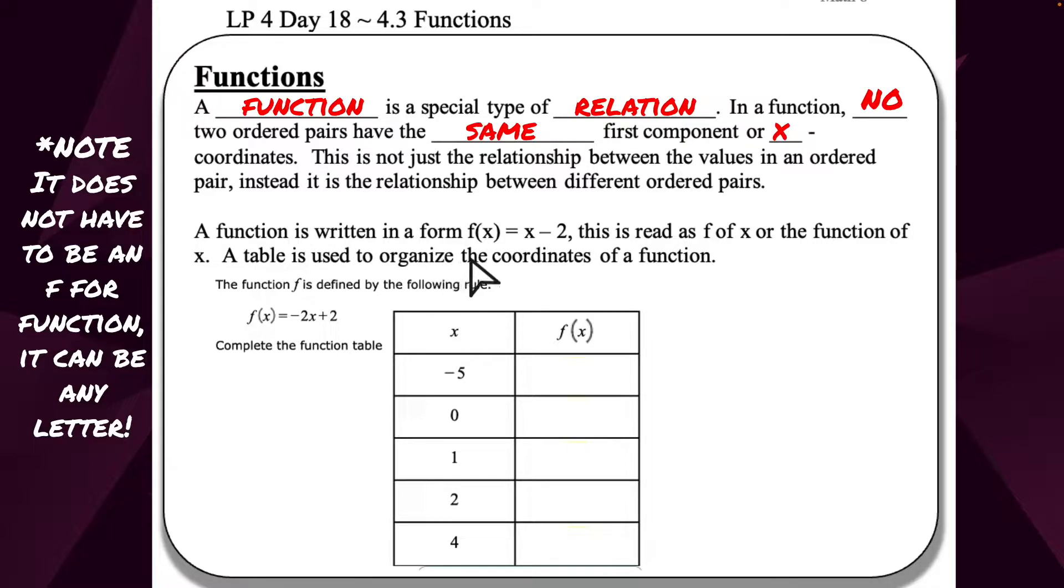A table is used to organize the coordinates of a function. What we want to do is plug in these values for x and see what we get. When it says f(x) in this column, it's asking what does this equal when I plug in negative 5 or when I plug in 0?